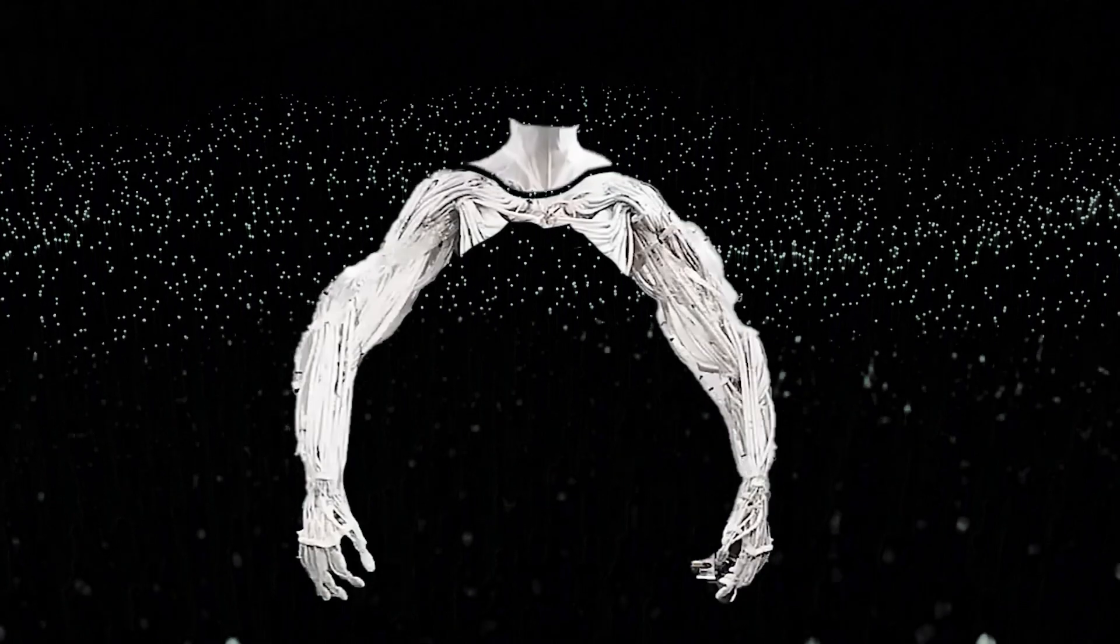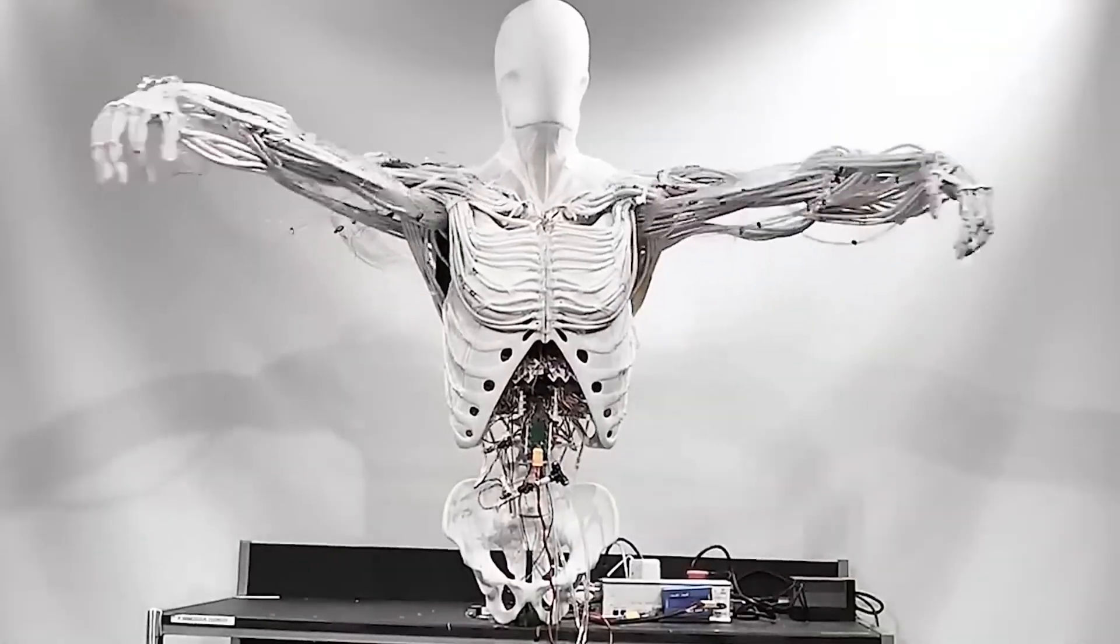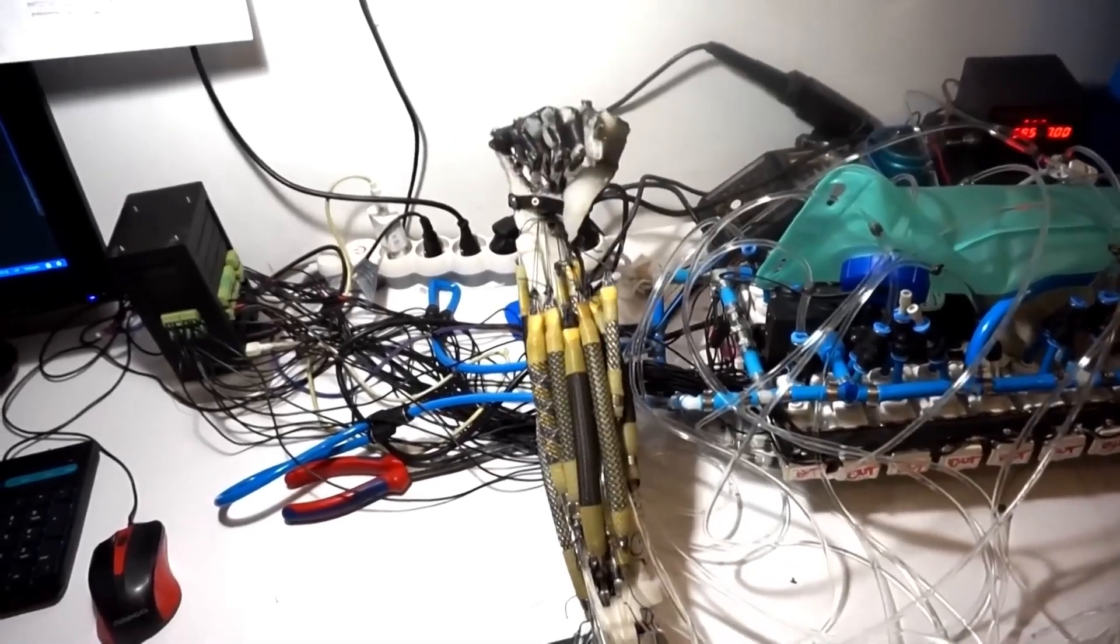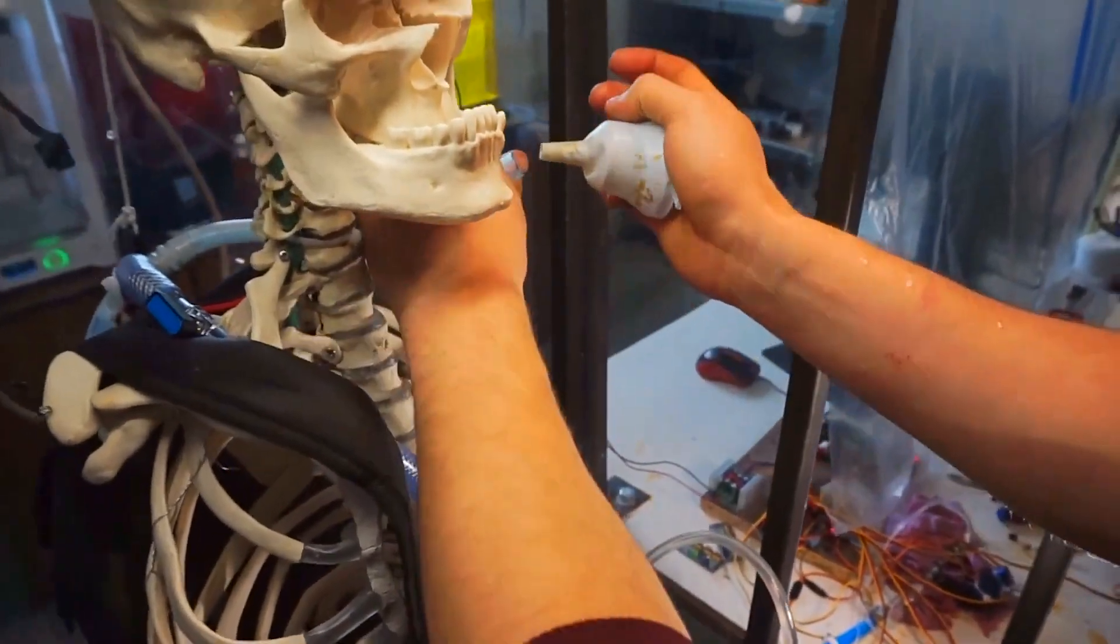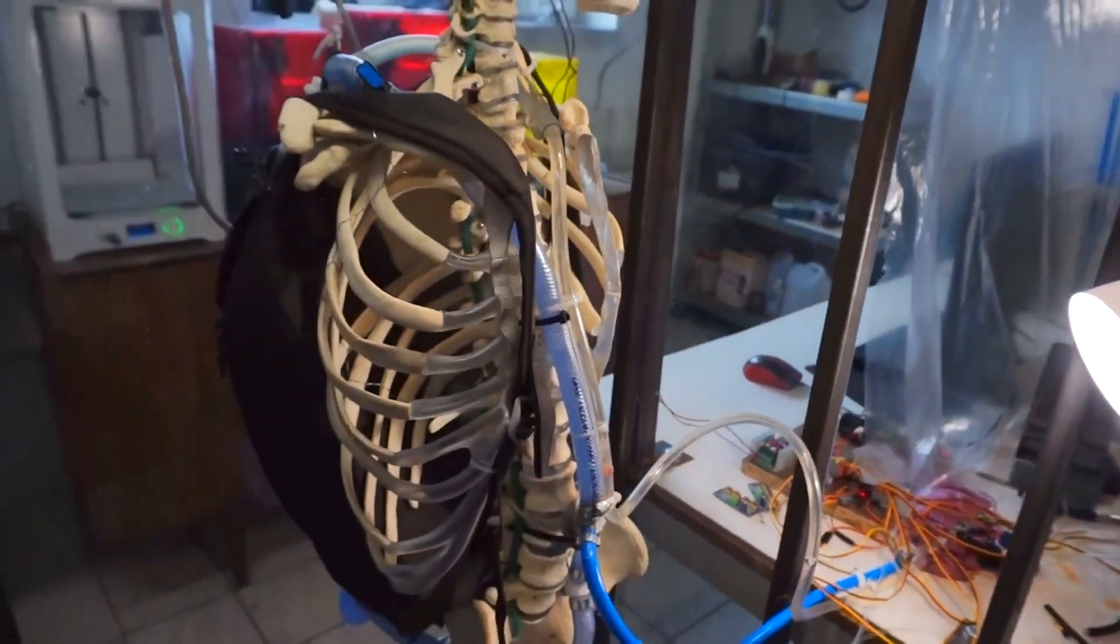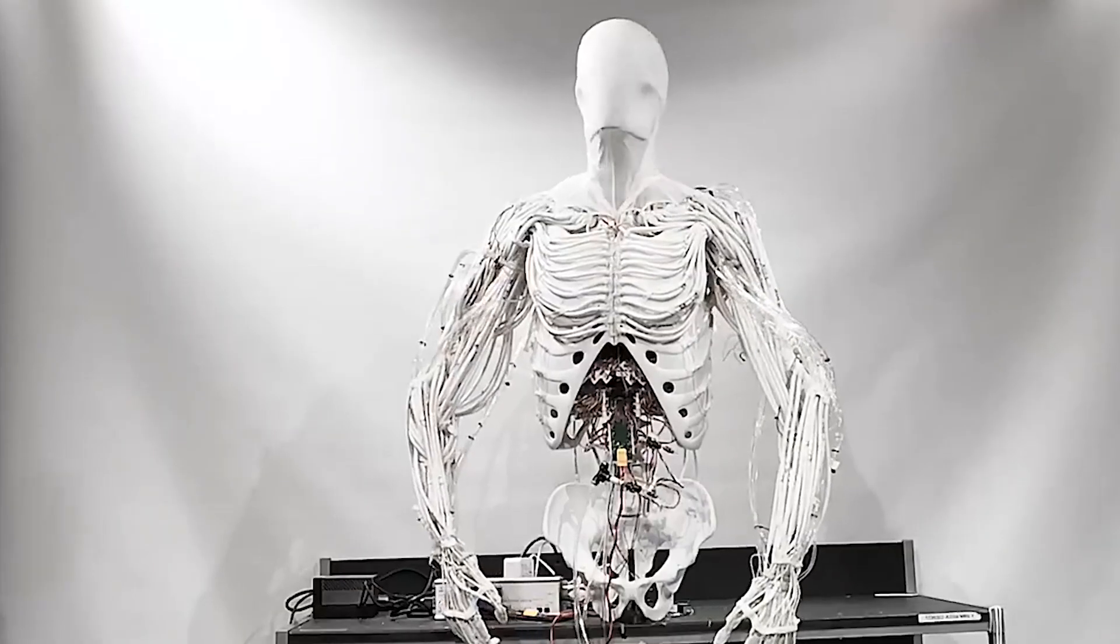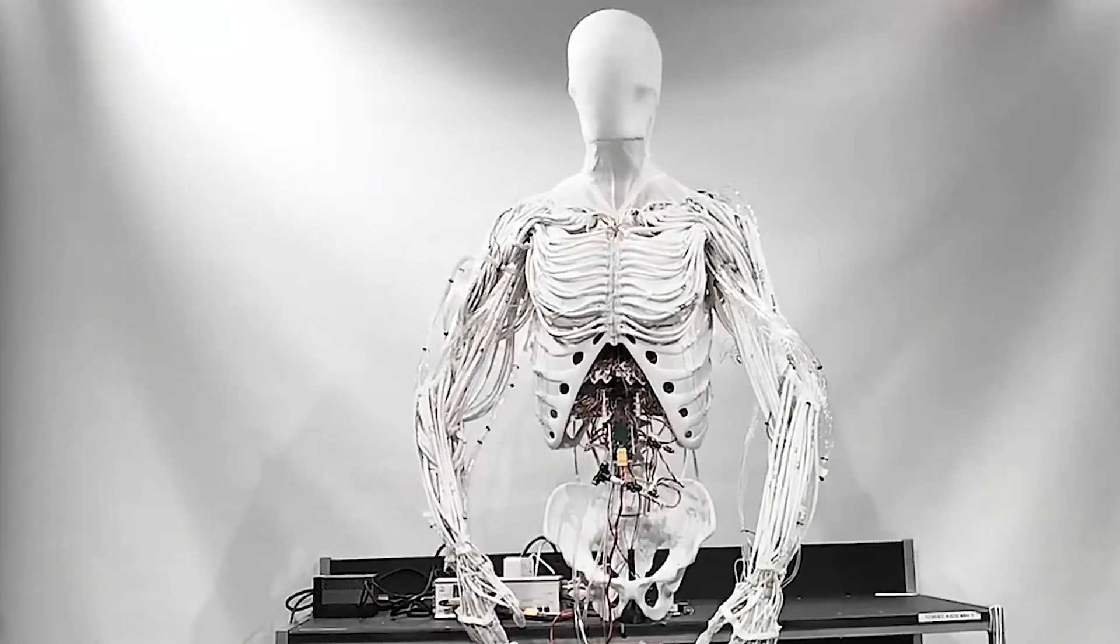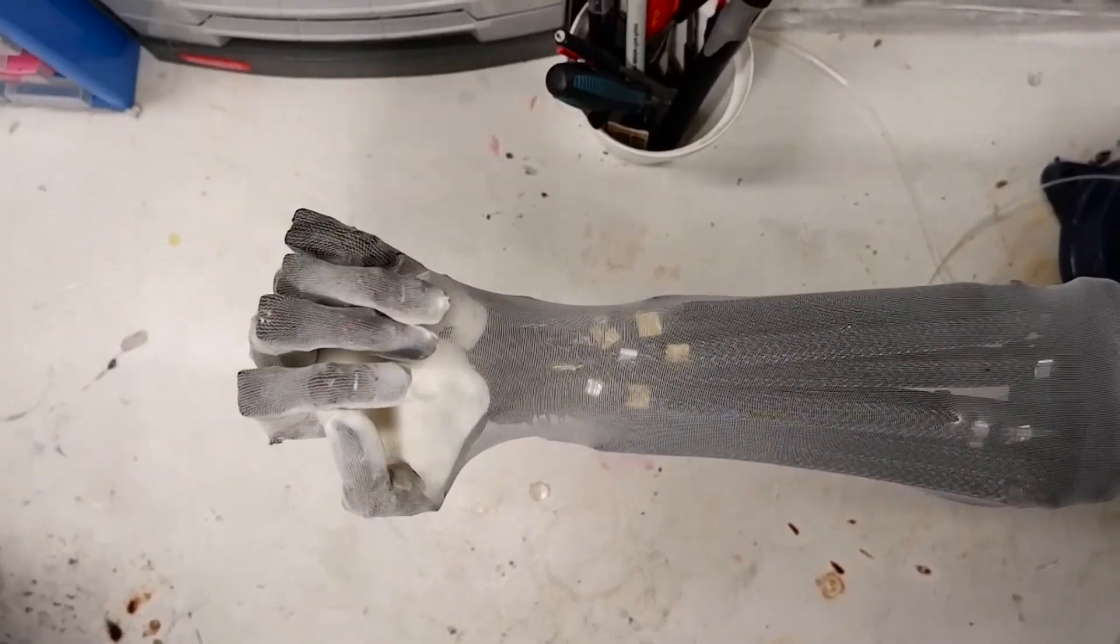A major feature that sets the ProtoClone V1 apart is its incredible musculoskeletal system. It's unlike anything we've seen before in robotics. Rather than relying on traditional metal bones and stiff joints, this innovative design utilizes 3D printed polymer bones that closely mimic human anatomy. These polymer bones are lighter than their metal counterparts and provide enhanced flexibility, allowing for more natural movement.